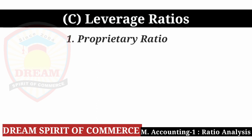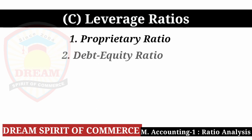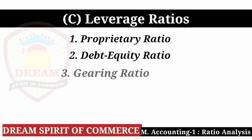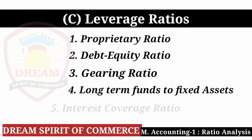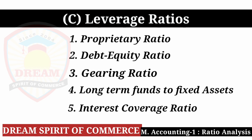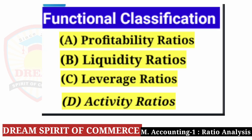In Leverage Ratio, first comes Proprietary Ratio, second Debt Equity Ratio, third Gearing Ratio, four Long Term Fund to Fixed Assets, and five Interest Coverage Ratio. So in functional classification: Type A was Profitability Ratio, Type B was Liquidity Ratio, Type C was Leverage Ratio.